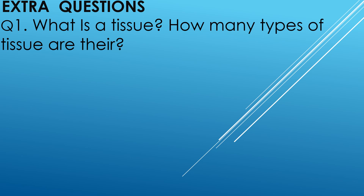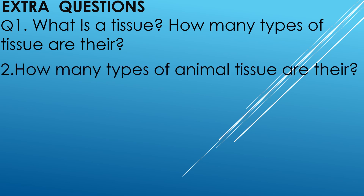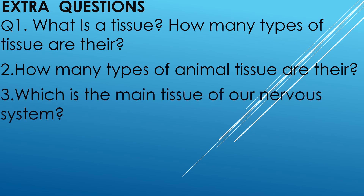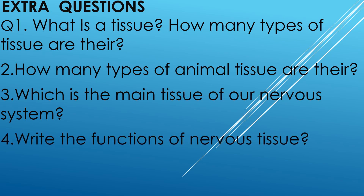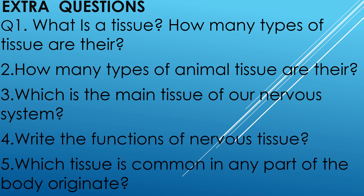Q1. What is a tissue? How many types of tissue are there? Q2. How many types of animal tissue are there? Q3. Which is the main tissue of our nervous system? Q4. Write the functions of nervous tissue. Q5. Which tissue is common in any part of the body organs?